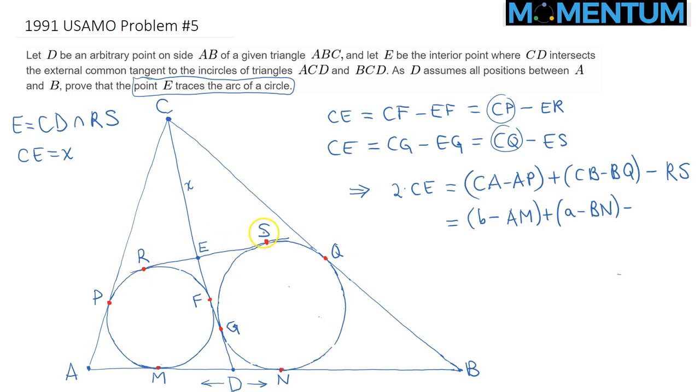RS, due to symmetry, is equal to MN. RS and MN are external tangents to these two circles. Does that make sense? So this is just minus MN.